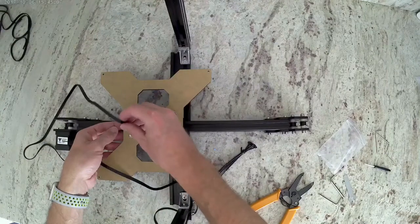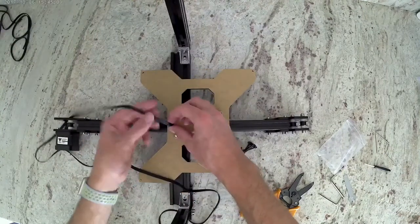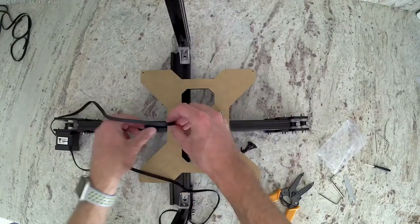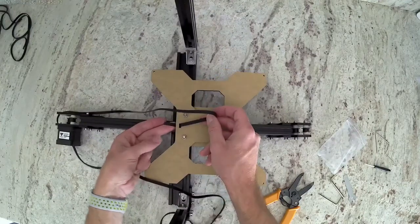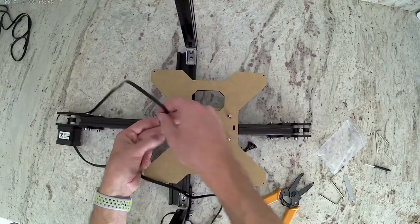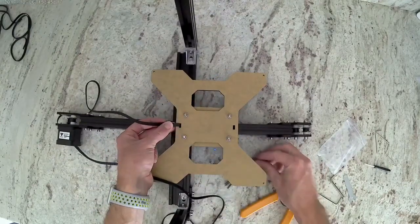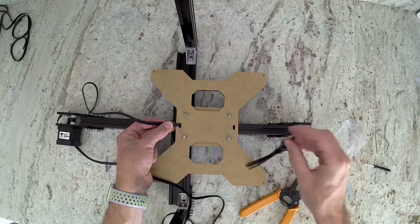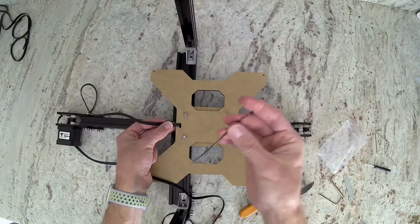To start, we're going to loop it through this hole on the heat bed mount. You're going to want the teeth going down. Now we're going to interlock the teeth and use a zip tie to hold those together.